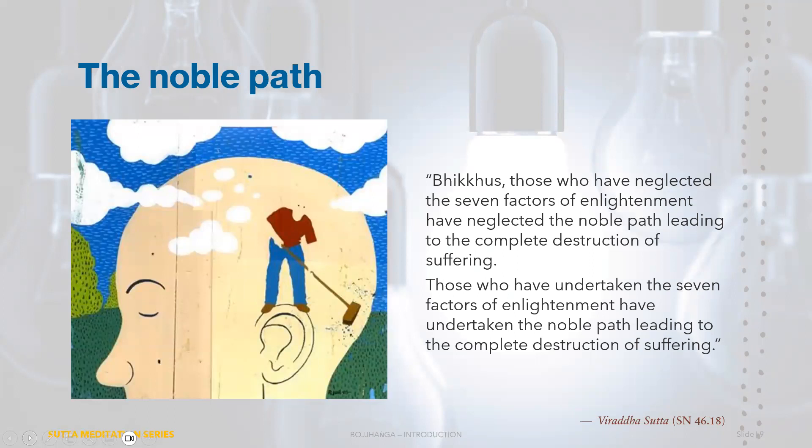In the Virida Sutta, the Buddha stated: 'Those who have neglected the seven factors of enlightenment have neglected the Noble Path leading to the complete destruction of suffering. Those who have undertaken the seven factors of enlightenment have undertaken the Noble Path leading to the complete destruction of suffering.' So this is the Buddha's encouragement to us — we want to be part of the group undertaking to develop the seven factors of enlightenment.